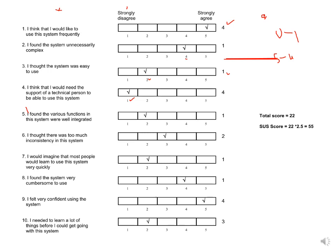The total score here is 22, so we multiply it by 2.5 to get a percentage. If you are still in doubt, for even questions each value maps as: 1 means 0, 2 means 1, 3 means 2, 4 means 3, and 5 means 4.